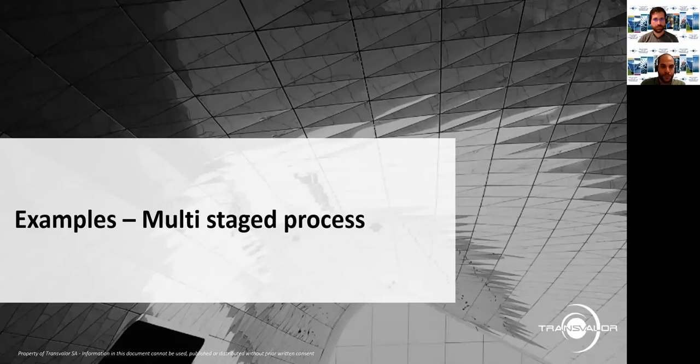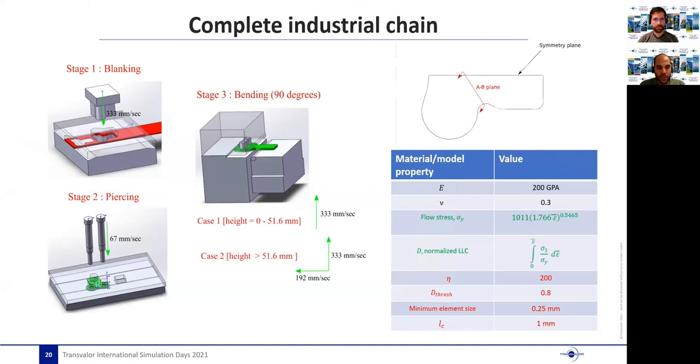In the next example, we will show a multi-stage process where we have a complete industrial chain taken with courtesy of Takemoto chain cooperation, where we have three consecutive stages, starting with a blanking stage, followed by a piercing stage and finally a 90-degree bending stage of the final product. The main objective is to show the ability of our numerical strategy to model the output of each fabrication stage to show the advantages and the quality of obtained products.